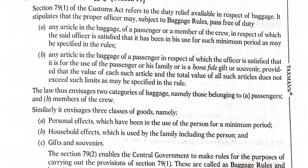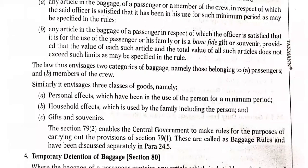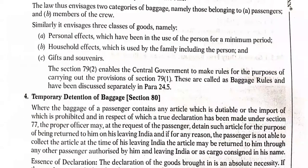The duty relief covers three classes of goods: personal effects which have been in the person's use for a minimum period, household effects for use of family members such as parents and siblings, and gifts or souvenirs. The central government has authority to make rules for this purpose. Duty relief is mainly not applicable if goods are bought for personal use, household use, or as gifts or souvenirs.